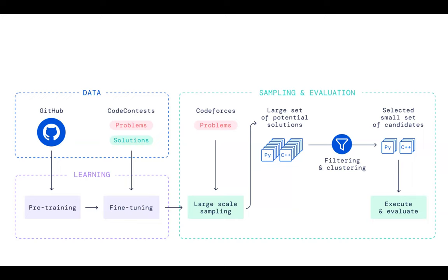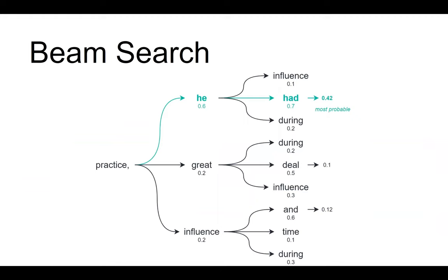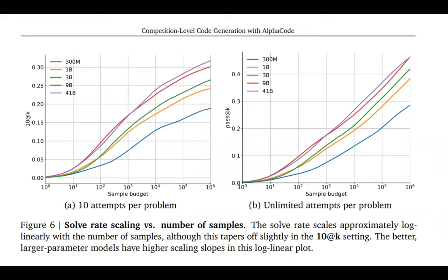They take advantage of beam search. Large language models don't produce whole text right away — they produce one token at a time, with a probability distribution. Because of this stochastic sampling, you can explore multiple branches rather than just choosing one. A log-linear scale diagram shows that the more you sample, the higher the chance that one of the solutions will be correct, and bigger models have a higher probability of finding the correct solution.